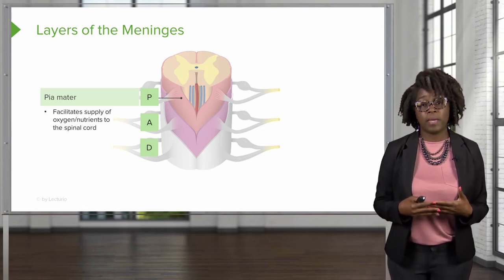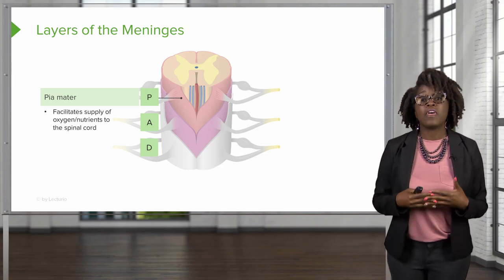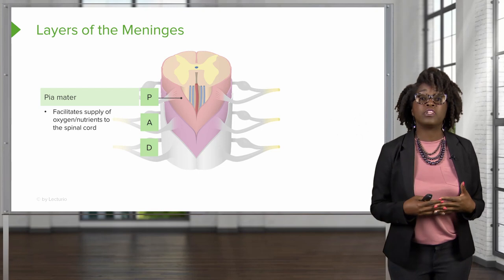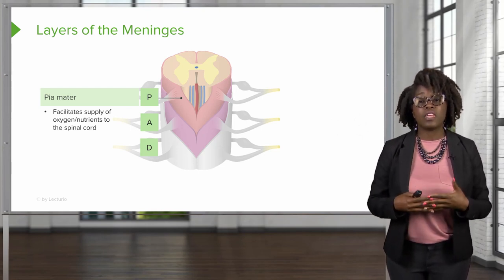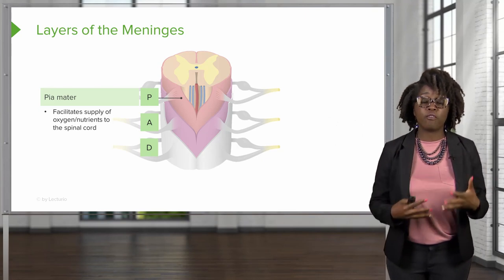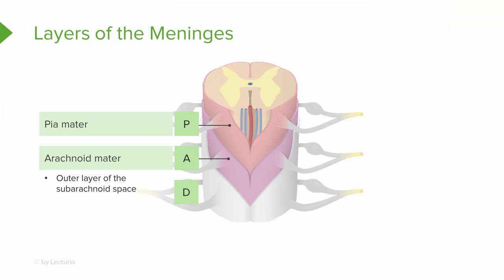There are extensions from the Piamater known as denticulate ligaments, which fuse with the arachnoid mater and the inner layer of the duramater, suspending the spinal cord and protecting it from displacement and shock. The middle layer of the meninges is the arachnoid mater — a thin avascular covering with a spiderweb arrangement of collagen and elastic fibers, hence the term arachnoid. It is continuous with the arachnoid mater of the brain, and the space between it and the Piamater is the subarachnoid space, where cerebrospinal fluid is found.